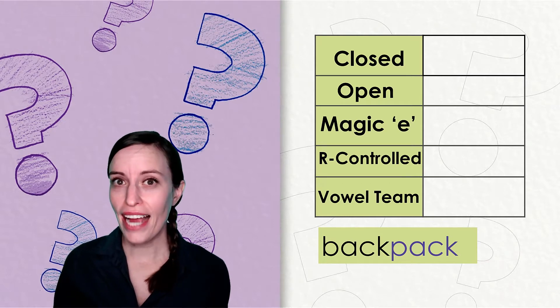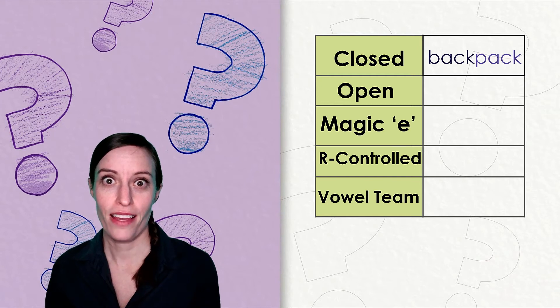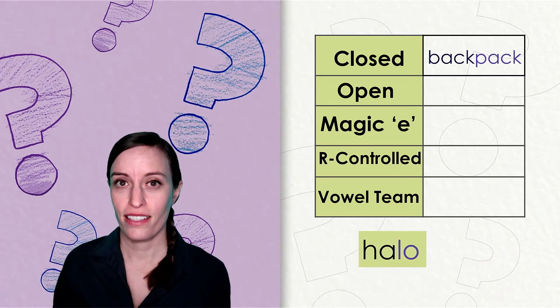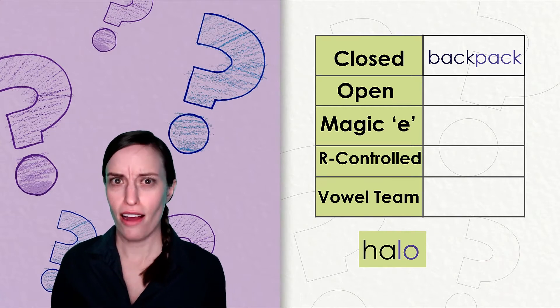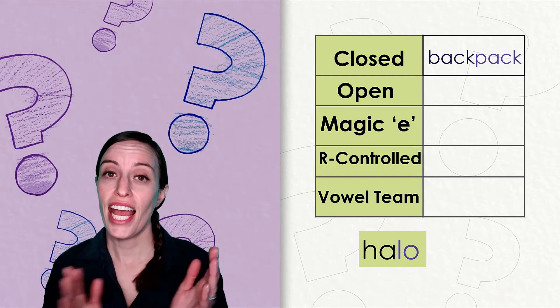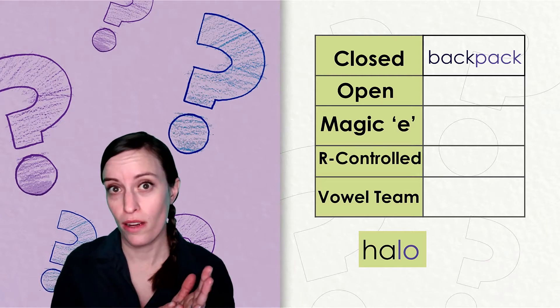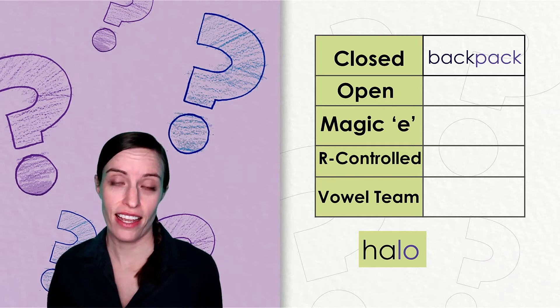Let's do another one. This word is halo. It also has two syllables. You can clap it with me: ha-lo. What types of syllables are ha and lo?